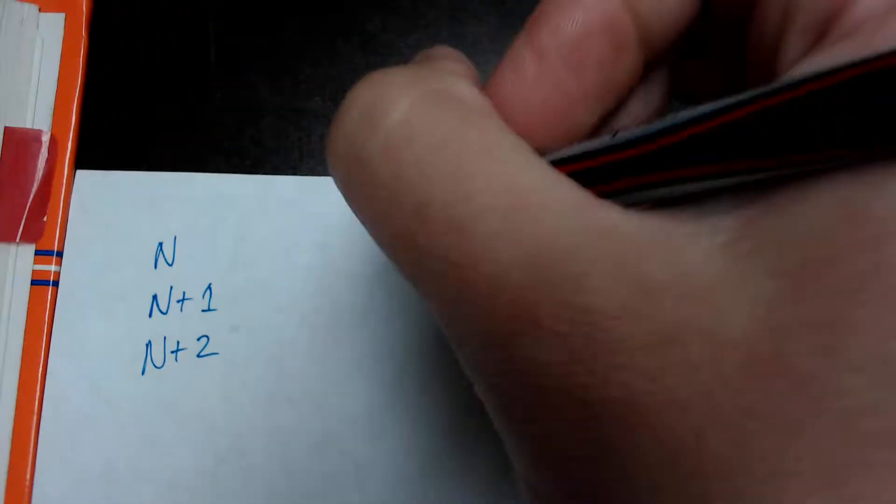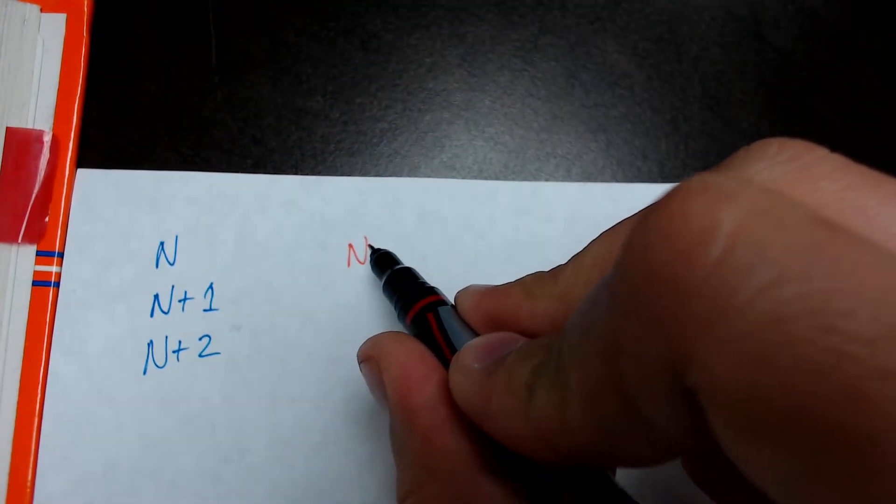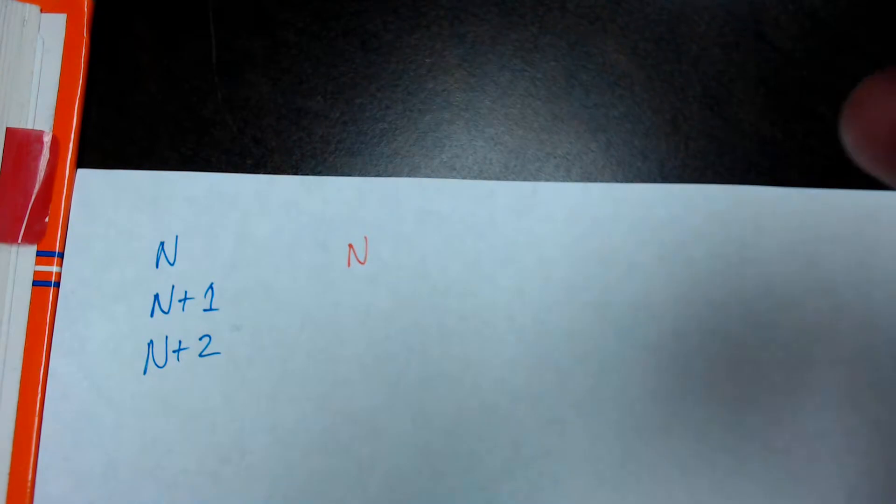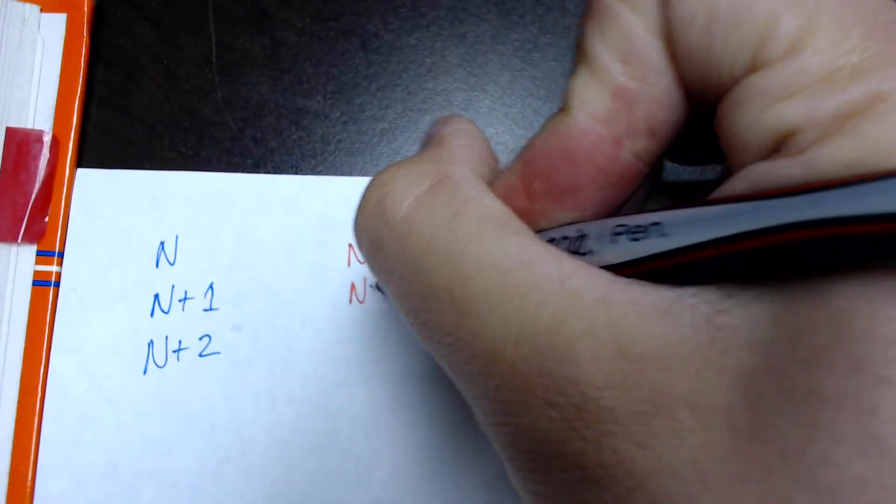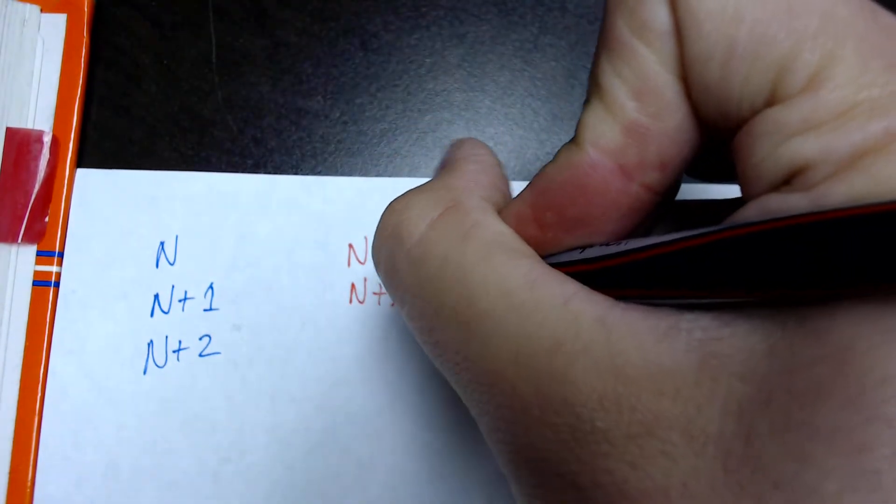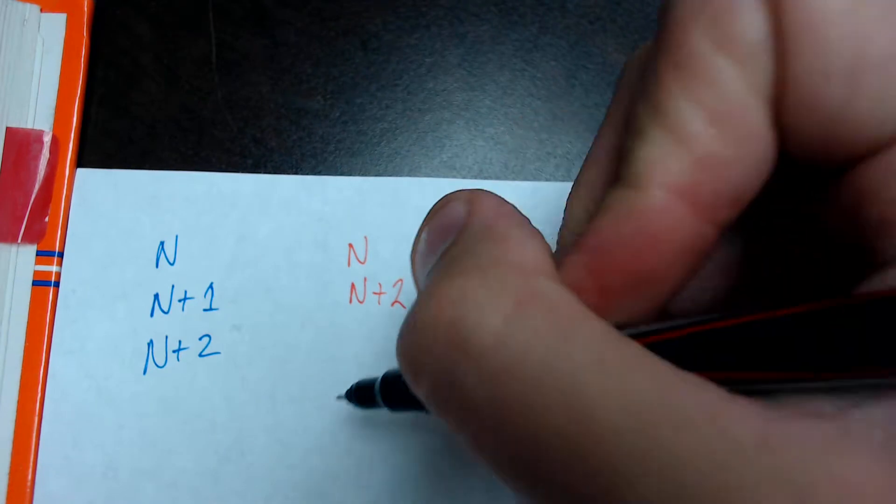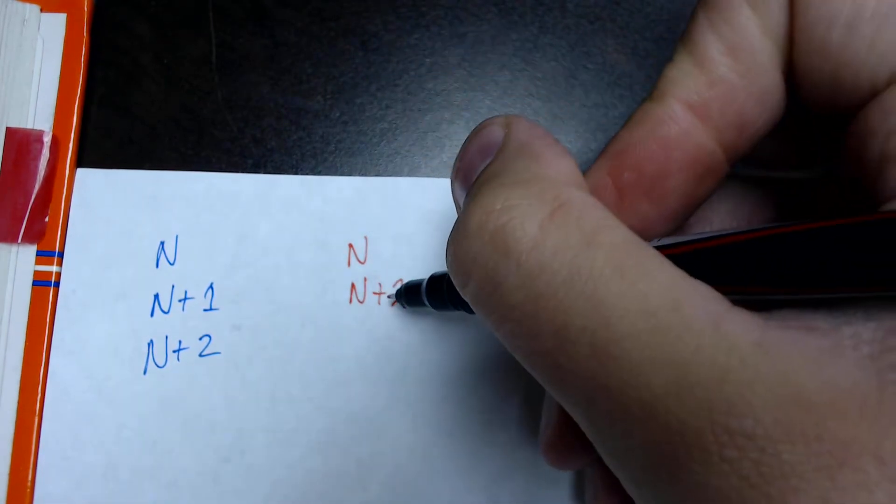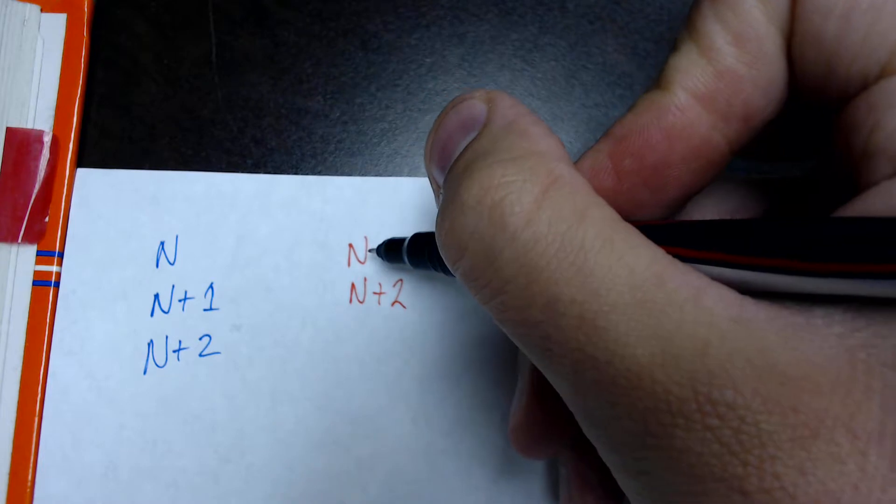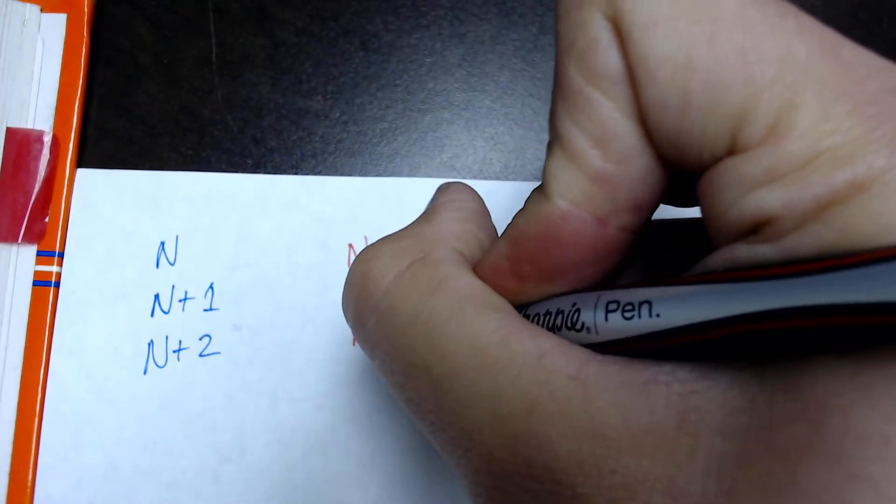Now, that's normal consecutive integers. Now, when we talk about consecutive odd integers, the first number is still going to be n, because we don't know what it is, right? Now, let's say n is 1. The next odd number is 3. So, in order to get to 3, how much do I have to add to 1? 2. So, the second number is going to be n plus 2.